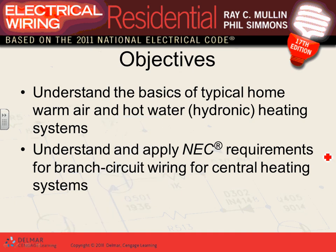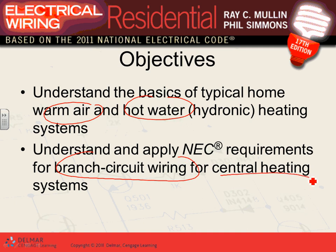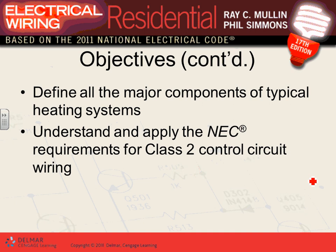We're going to talk about warm air versus warm water circulation to meet heating requirements, branch circuits and controls for central systems, major components of a typical heating system, and NEC requirements for Class 2 circuits. When it comes to HVAC equipment, I can't emphasize enough—you are always dealing with two circuits: circuit number one to power the equipment, and circuit number two to control the equipment.